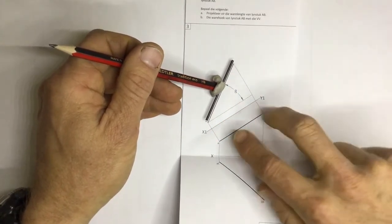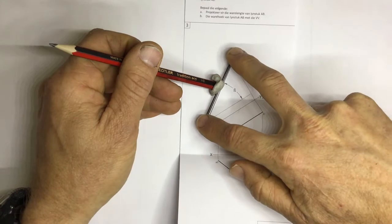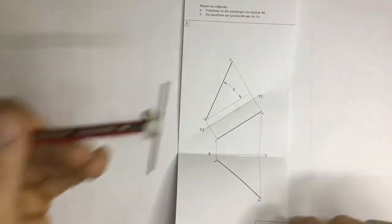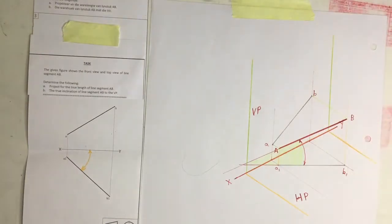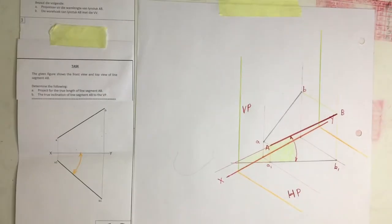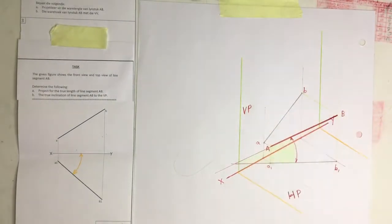And in that way, I can get the true length of that line. How do we go about doing this question? First of all, what I've done is I have just drawn this whole lot out as an isometric view...